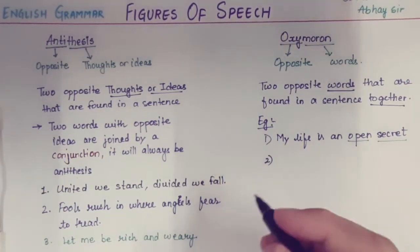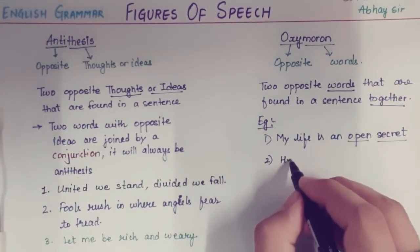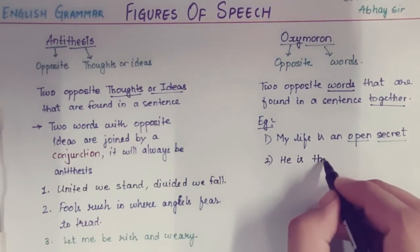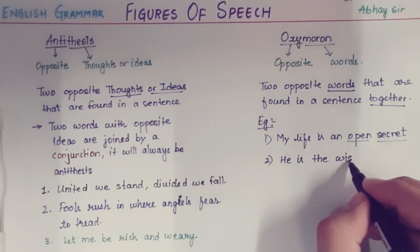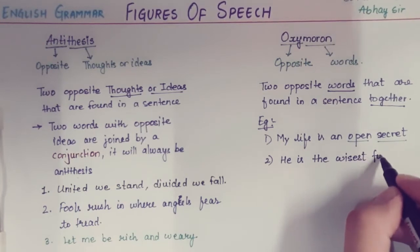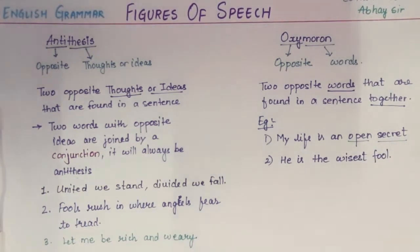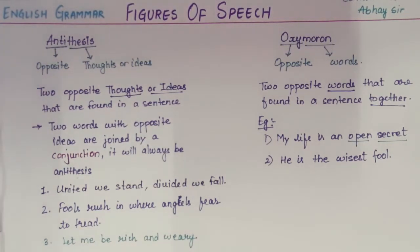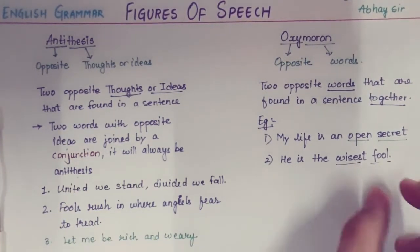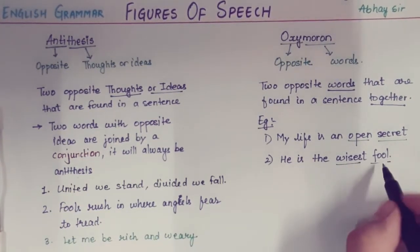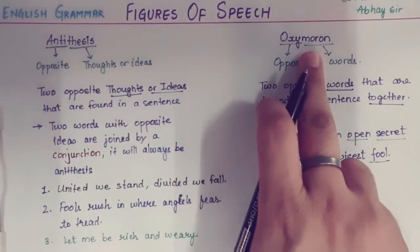The next oxymoron example is: 'He is the wisest fool.' 'Wisest' refers to a person having wisdom, and 'fool' refers to someone not able to respond properly. So 'wisest fool' — two opposite words coming together without any conjunction — becomes your oxymoron.